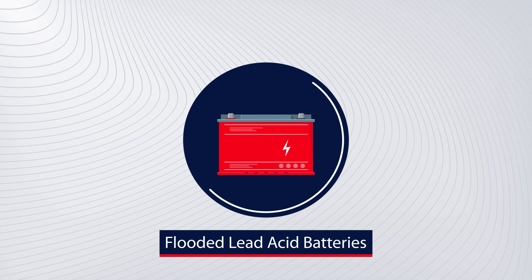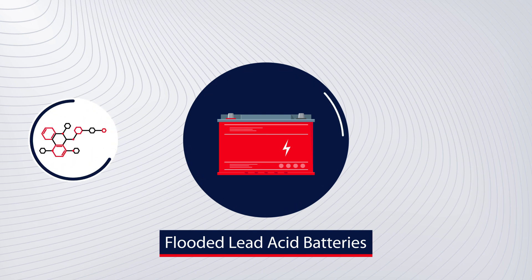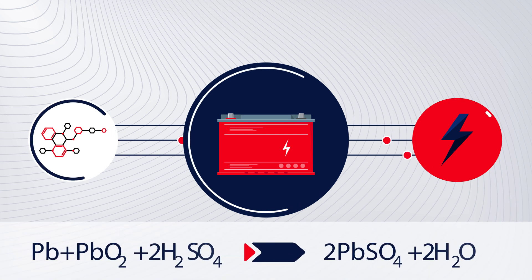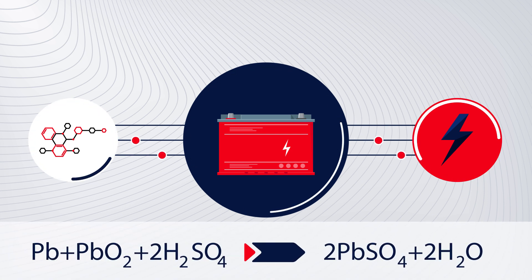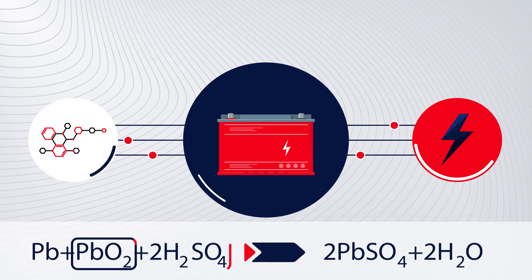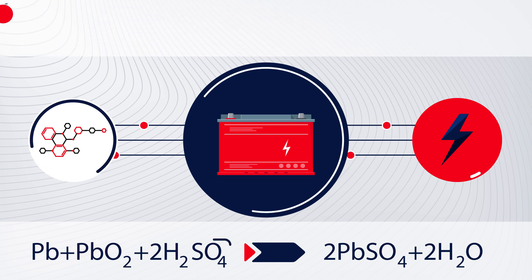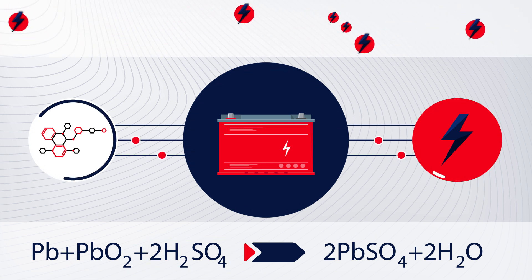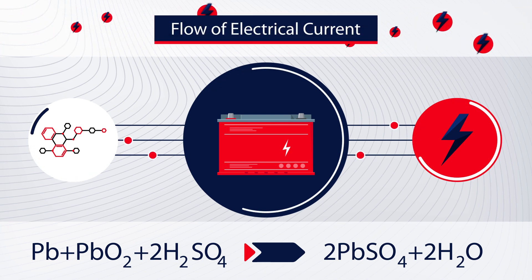Flooded lead-acid batteries work by converting stored chemical energy into electrical energy. Electrical energy is created from a chemical reaction that occurs between lead dioxide and sulfuric acid. This reaction generates an excess of electrons that rearrange themselves, resulting in the flow of electrical current.